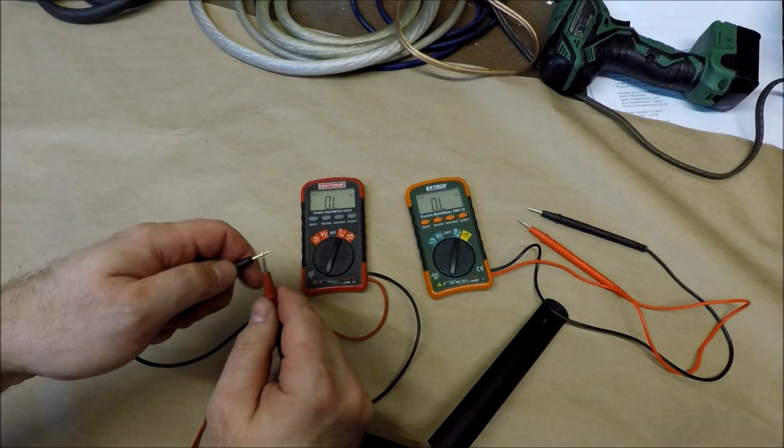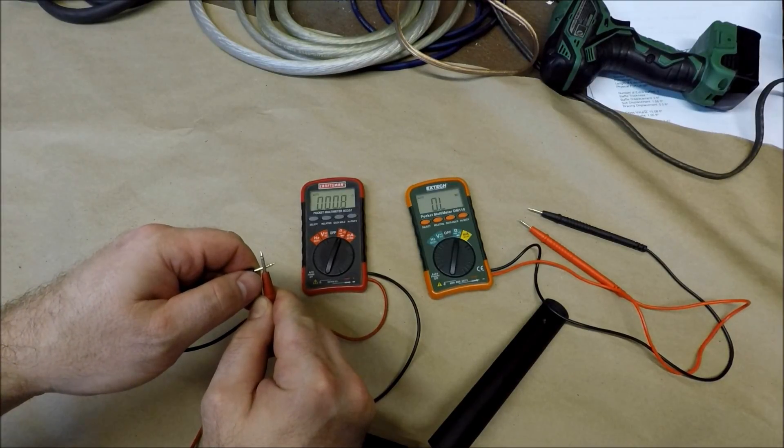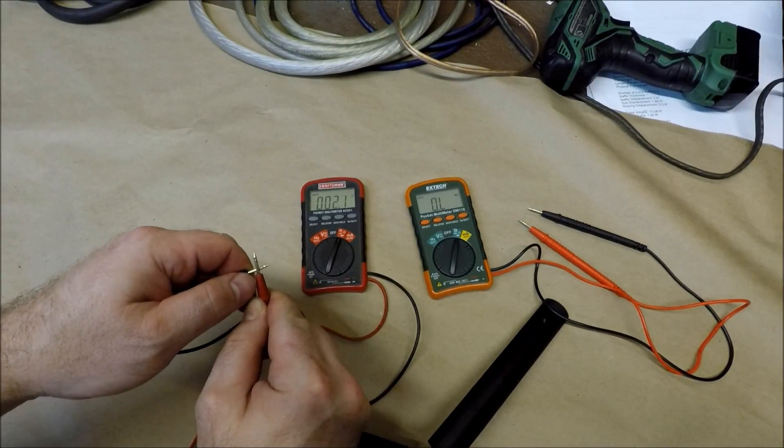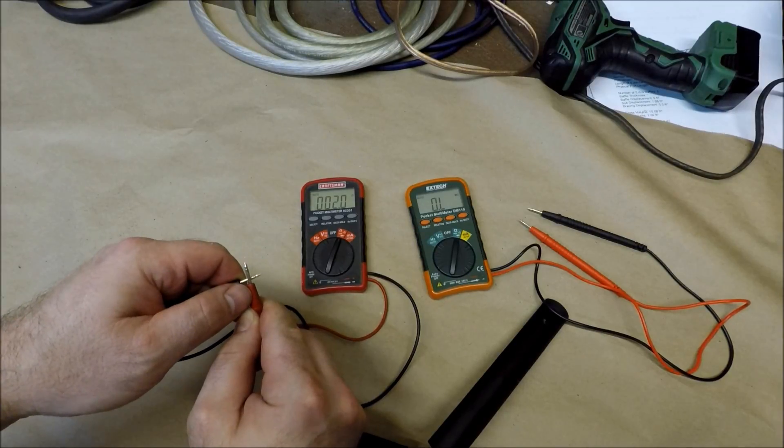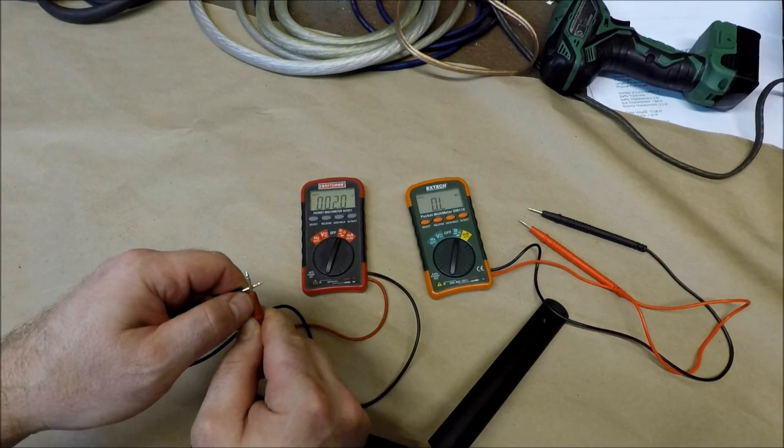You use a meter like this Craftsman and you just don't know what it's going to say. Your impedance is going to look all over the place. Your subwoofer is going to look like there's something wrong with them.